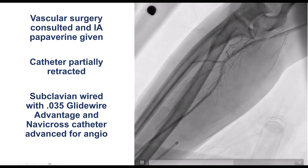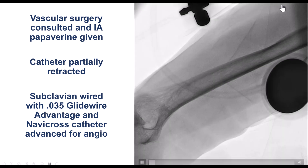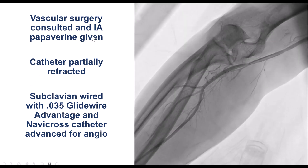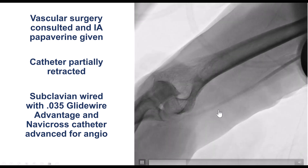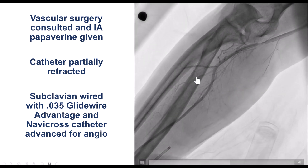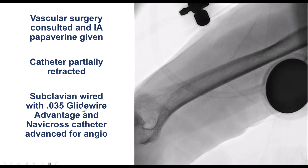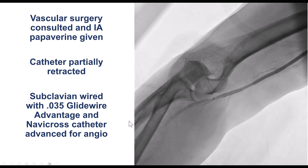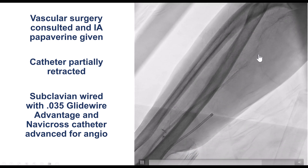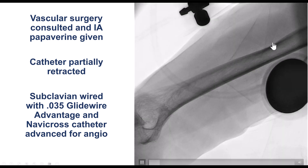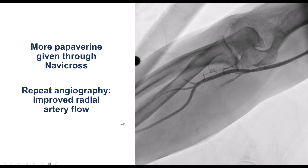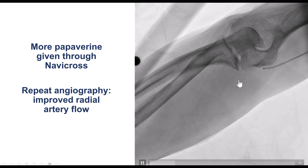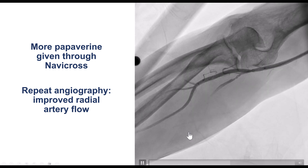Unfortunately, at this point we still had the issue of removing the catheter. Eventually, after giving some intra-arterial papaverine, we were able to retract it, but only partially — then it became entrapped again. We used another catheter advanced via the femoral axis to obtain an angiogram and gave some more papaverine. We can see there is still some spasm and poor flow into the radial artery.